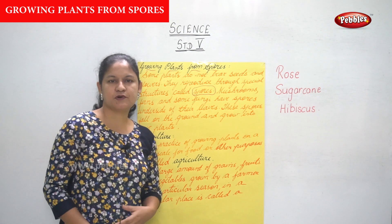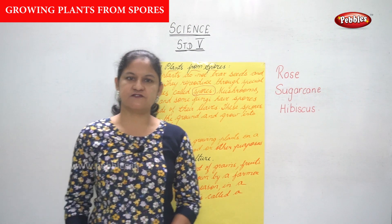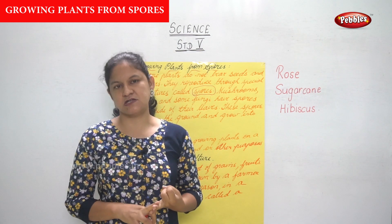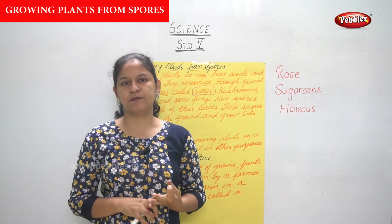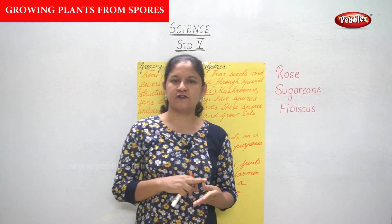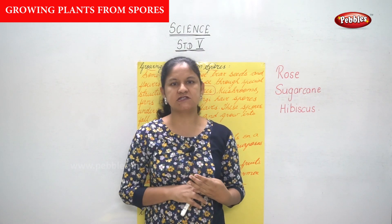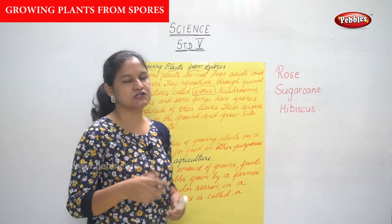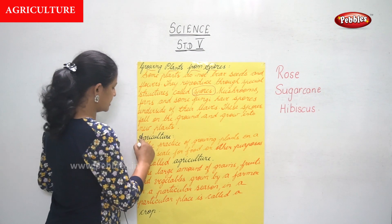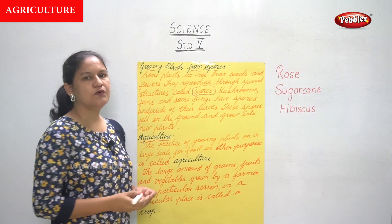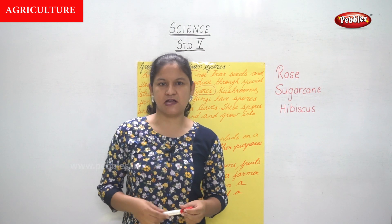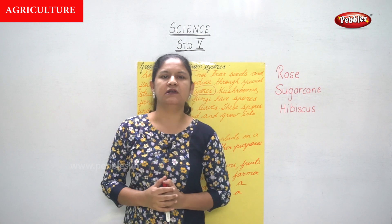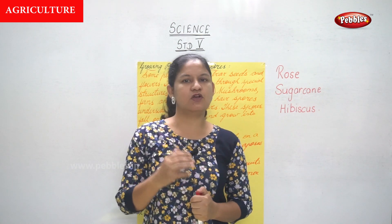So this is about reproduction through vegetative parts — that is growing plants from stem, growing plants from roots, growing plants from leaves, and finally growing plants from spores. Moving on to the next topic, we are going to talk about agriculture. We all know that agriculture is the backbone of our country and many people survive only because of agriculture.